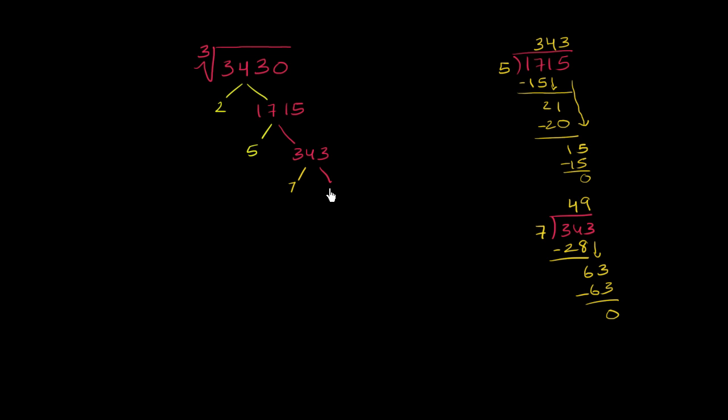And 49 might jump out at you, it can be factored into 7 times 7. So this is interesting, I can rewrite all of this here, the cube root of 3,430 now as the cube root of, I'm just going to write it in its factored form, 2 times 5 times 7 times 7 times 7, or I could write times 7 to the third power. That captures these three sevens right over here. So that's 7 to the third power.